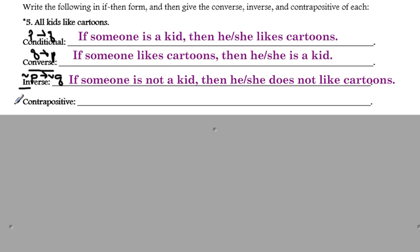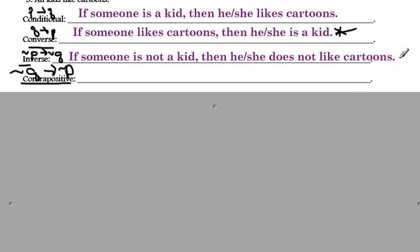And then the contrapositive. Big long word. We're going to do everything to it. So, instead of saying P and Q, we're going to flip it. We're going to flip our P and Q, and then we're going to negate both our P and Q. So, if someone is a kid and he or she likes cartoons, flip it. If someone likes cartoons and he or she is a kid, and then negate it. So, we can just take our converse here and negate this. So, if someone does not like cartoons, then he or she is not a kid.